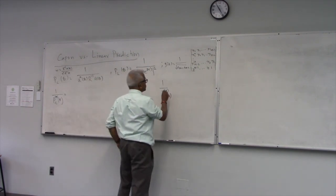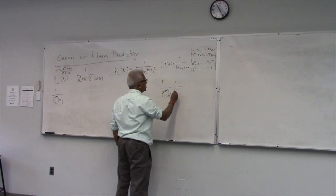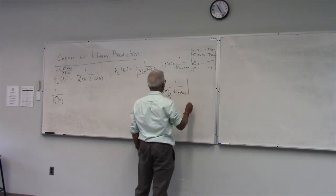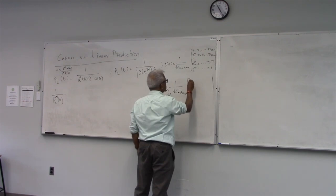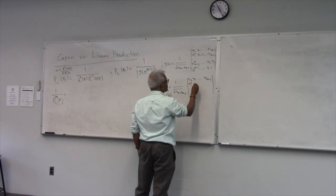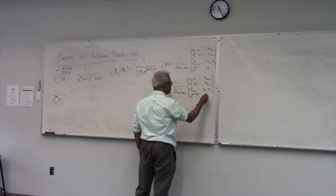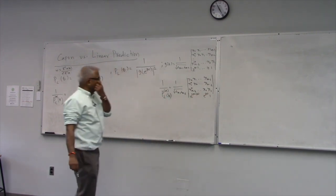So M is, the superscript is just to note that we are dealing with M sensors. So this is 1 over R0, R1 up to Rm minus 1. Then R1 star, R0. Okay, so that's the polynomial.